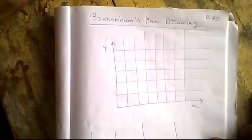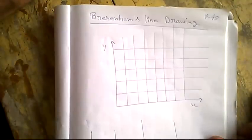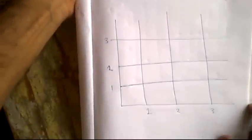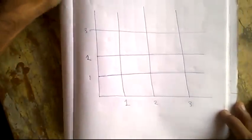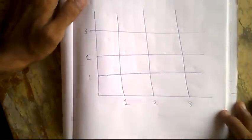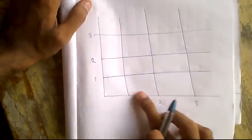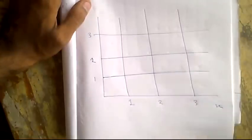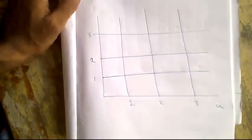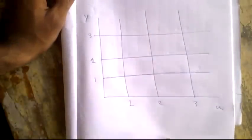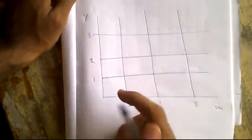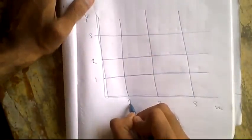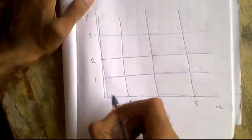To understand Bresenham's line drawing algorithm, first we have to understand the graph. Suppose this is a general graph — this is the x-axis and this is the y-axis. This part is x, this part is y.